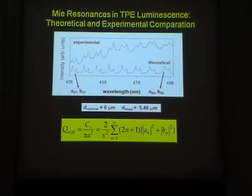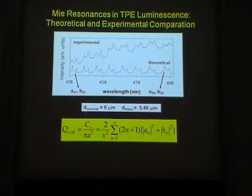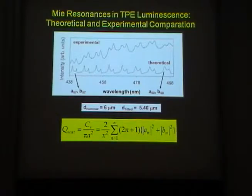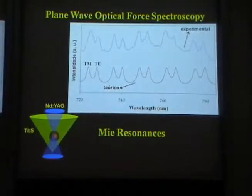One of these features is due to the a coefficient and the other to the b coefficient, which we call TE and TM modes of the microsphere. You see that they come in pairs — TM, TE, TM, TE, TM, TE — and we saw these in luminescence.